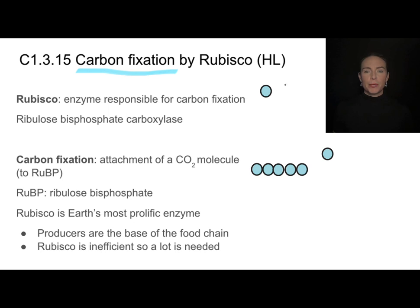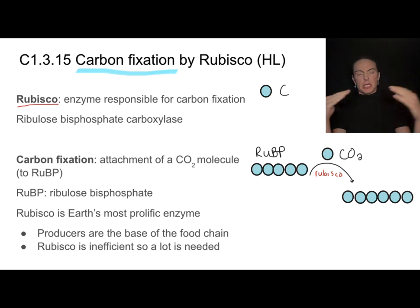I'm going to be using these blue circles to represent a carbon atom. In this case, I have a five carbon molecule, and this is RuBP. And here I have a one carbon molecule, carbon dioxide. What Rubisco is going to do, that's an enzyme, it's going to help fix this carbon dioxide molecule to RuBP. When we say fix, what we really mean is stick to. So Rubisco is an enzyme that fixes a carbon to RuBP, and I get a six carbon compound, one from the carbon dioxide and five from RuBP.